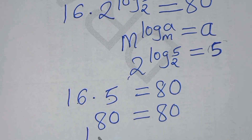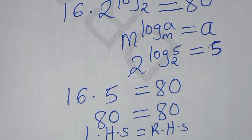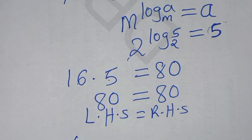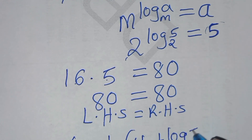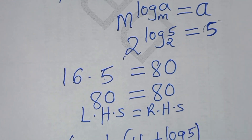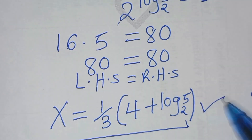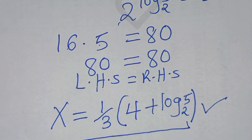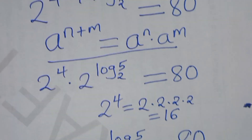So the left-hand side is equal to the right-hand side. Therefore, the value of x, which is equal to one-third times the bracket 4 plus log 5 to base 2, actually satisfies the equation. Please like this video and subscribe.